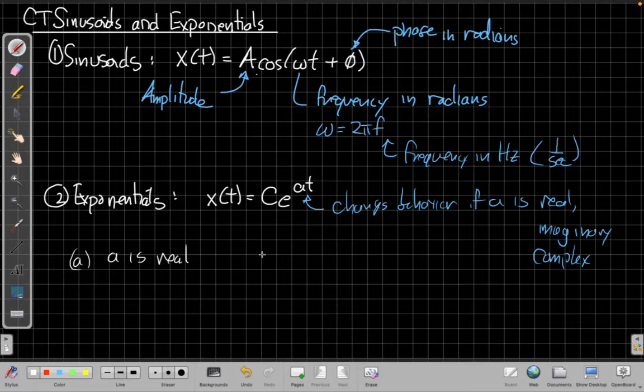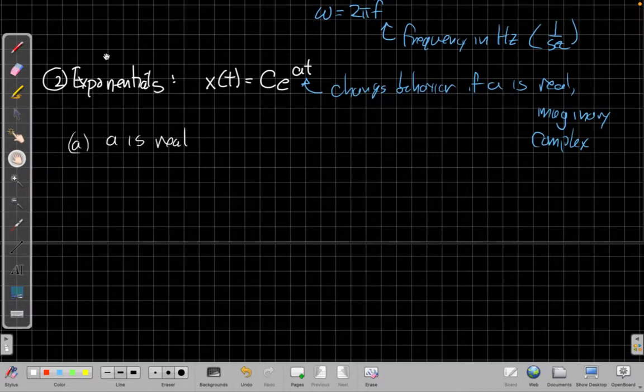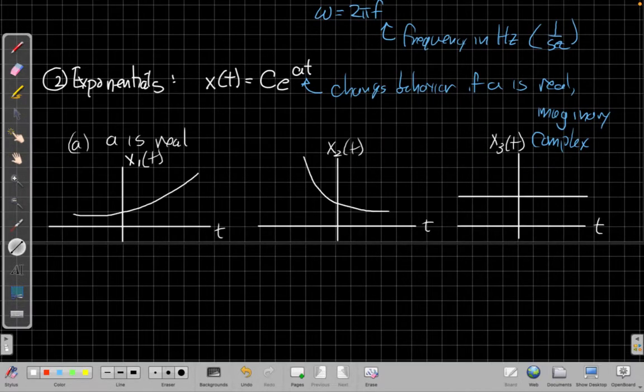Then the sign of a will still determine what the signal behaves like. I can get different looking signals depending on whether a is positive, negative, or zero. Here are three different cases for all from exponential signals with real choices of a. We can see things that grow, things that decay, or things that remain constant.